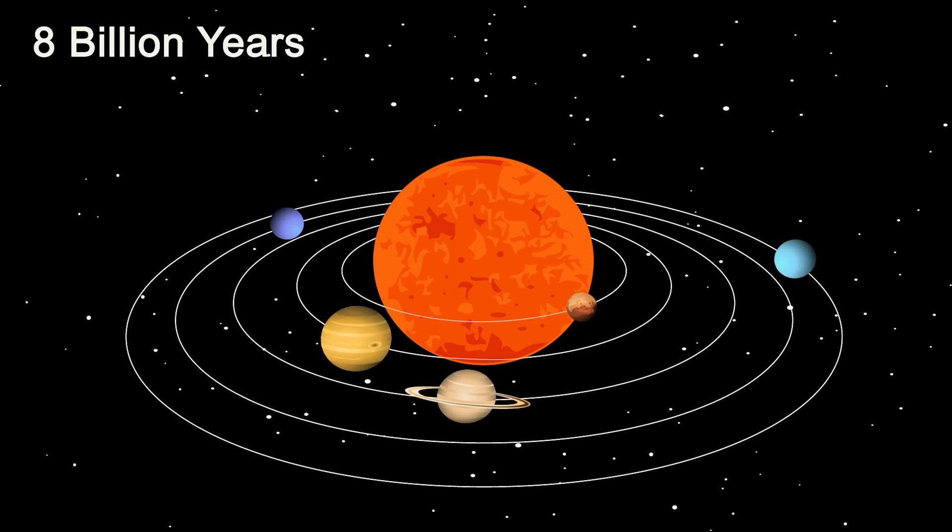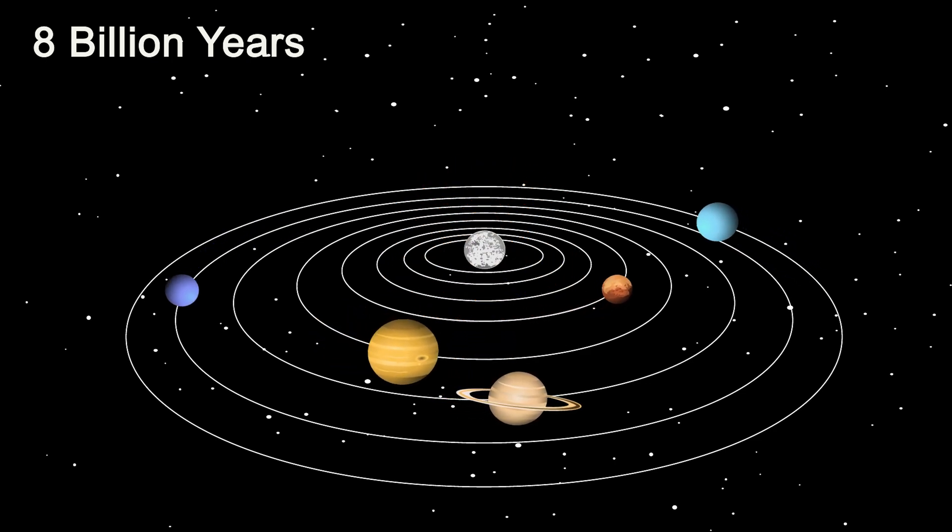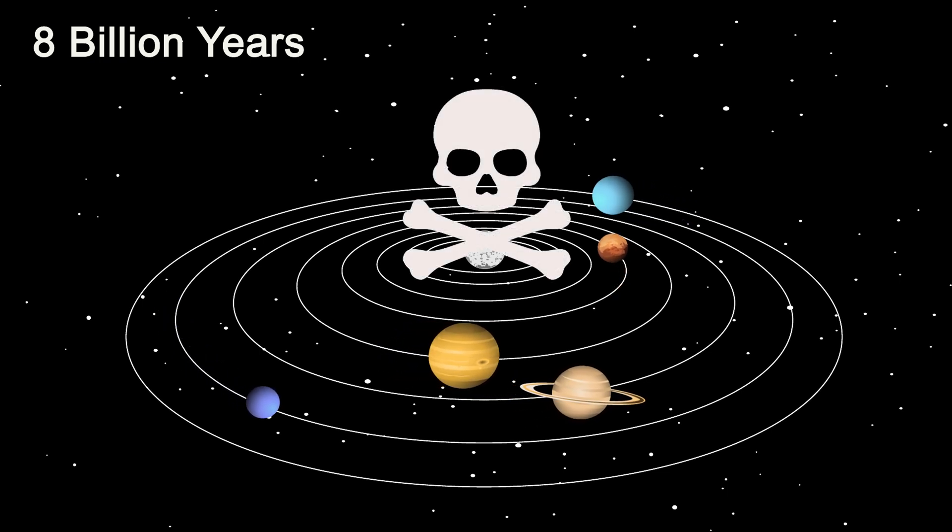At around 8 billion years, the sun will then shed its outer layers and leave behind a white dwarf, marking the end of the sun as a main sequence star, and all potential life in our solar system will most likely die.